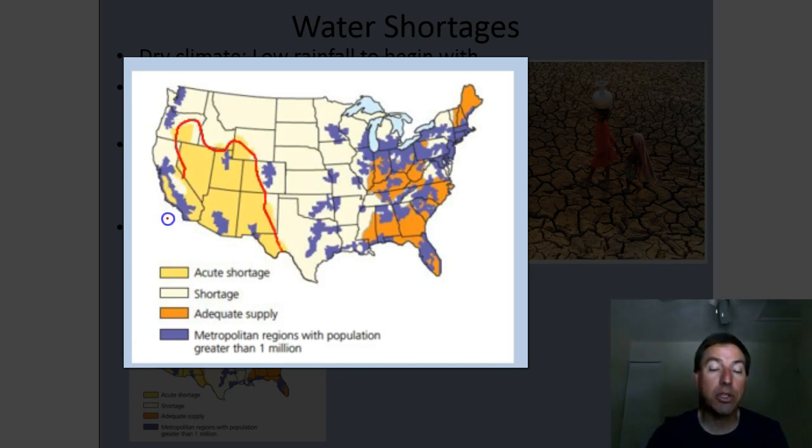If we outline this area, this is the area that has the largest amount of water scarcity, and obviously this is the desert southwest. There are also some other areas in here of shortages, and that's most of the United States, and especially those areas around large urban areas. All this blue is large urban centers, and there tends to be quite a lot of water shortages in those areas.